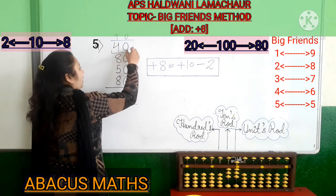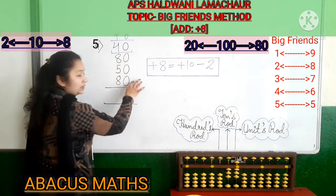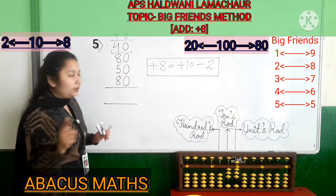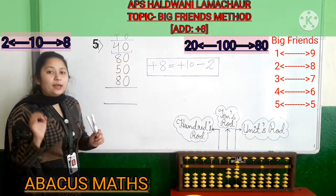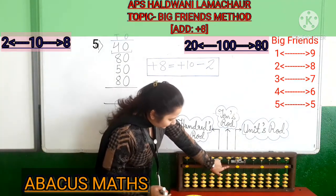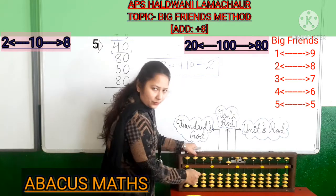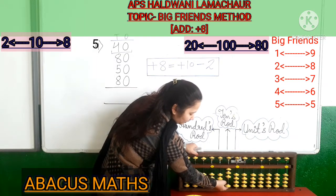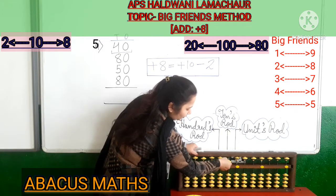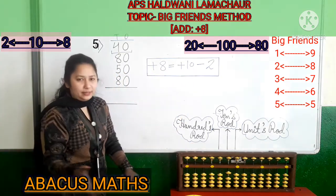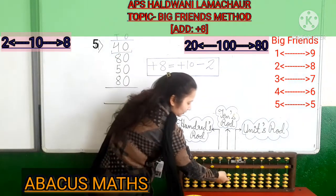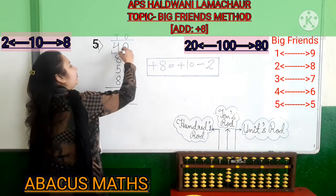We will do this sum like this. In this sum you can see that all the ones-rod numbers are 0. So you will work only in the 10s rod. Set your abacus: upper beads up, lower beads down. In the 10s rod, the upper bead value is 50, and the lower beads are 10, 20, 30, 40. First of all, add 40: 10, 20, 30, 40. 40 is added.